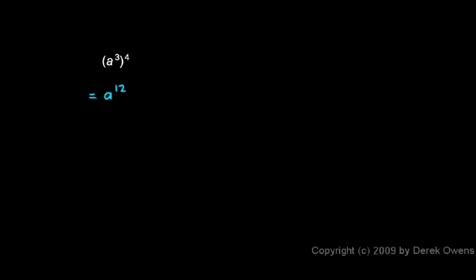The three and the four multiply to give you a 12. And here's why. a cubed to the fourth — well, what does a cubed mean? That means a times a times a. That's a cubed: a multiplied by itself three times. Well, what we have is a cubed to the fourth. And what does to the fourth mean? That means we multiply something by itself, and there's a total of four of those things. So what do we have multiplied together four times?